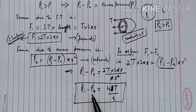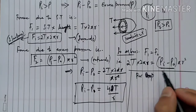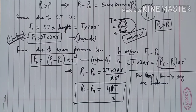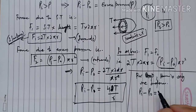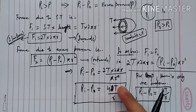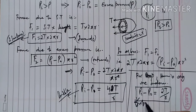So the excess pressure inside a soap bubble is 4T/R — four times surface tension divided by radius. If we look at a liquid drop, for a drop there is only one surface — the outside. So the excess pressure for a drop is Pi − P0 = 2T/R, that is, twice surface tension divided by the radius of the drop.